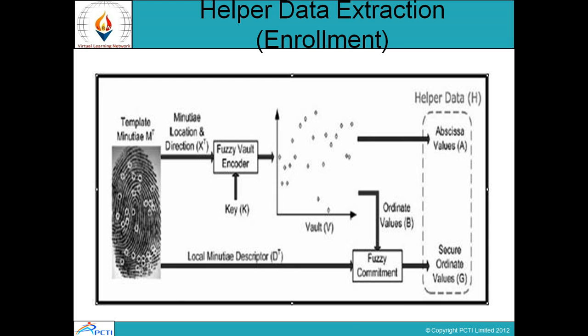An adversary cannot decode the vault even if the correct set of minutia is selected. We use a minutia descriptor which captures orientation and ridge frequency information in a minutia neighborhood for securing the polynomial evaluations. This modification leads to a significant increase in both the security and matching accuracy of the vault.